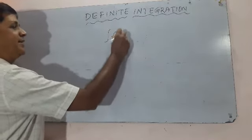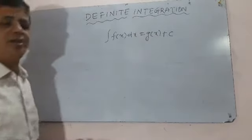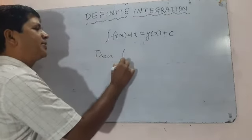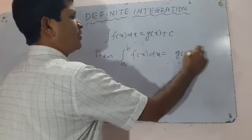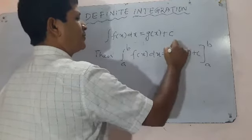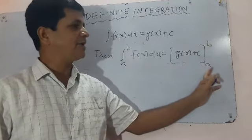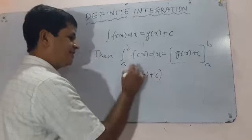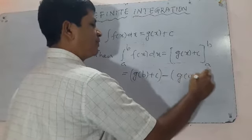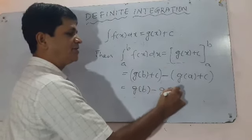If the integration of f(x) dx is equal to g(x) + c, then the integration from a to b of f(x) dx equals g(x) + c evaluated from a to b. You put the value b in place of x, then the value a in place of x, so that equals g(b) + c minus g(a) + c. The c terms cancel out, giving g(b) minus g(a).